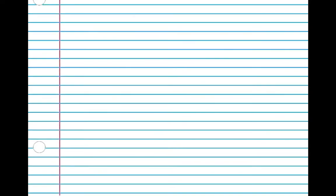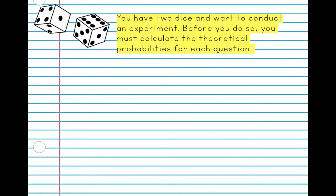So let's move on to some examples. So you have two dice and want to conduct an experiment. Before you do so, you must calculate the theoretical probabilities for each question. So first, let's begin. And reminding you, our denominator is 36.